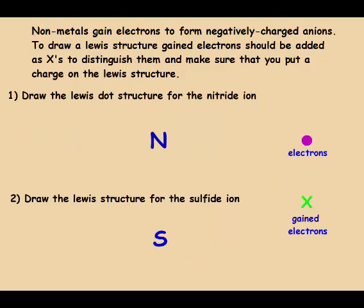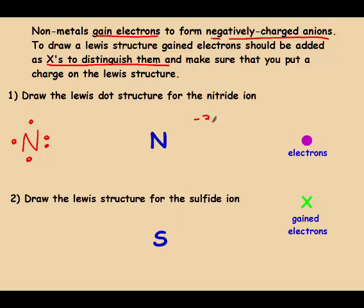Non-metals gain electrons to form negatively charged anions. To draw Lewis structures with gained electrons, we put X's to distinguish them from the original electrons, and make sure we put the charge on the Lewis structure. Some textbooks just have you add them as dots — it doesn't really matter. So nitrogen starts with five valence electrons, and it has a negative three charge, which means it should gain three.